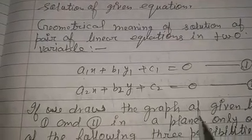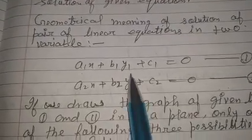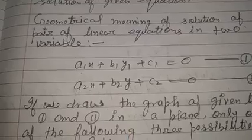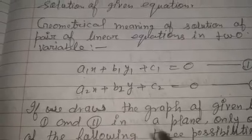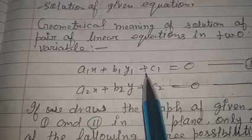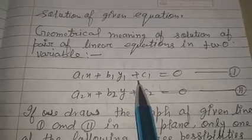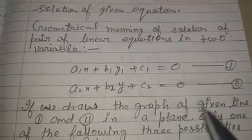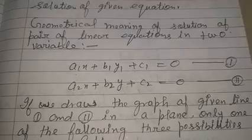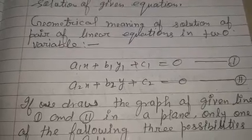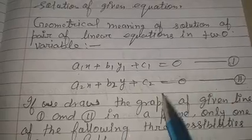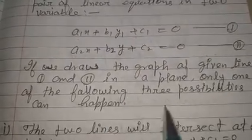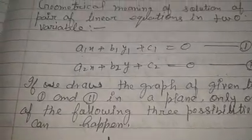If we draw the graph of the given first and second equations — अगर इन दोनों equations का हम graph draw करें — तो हम जानते हैं कि किसी भी linear equation का graph straight line होता है। तो equation first का भी graph straight line और equation second का भी straight line मिलेगा। But इन दोनों के graph के बीच में following three possibilities can happen।